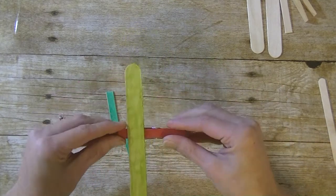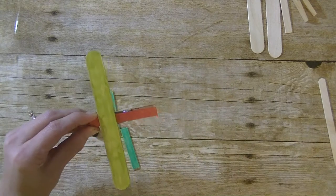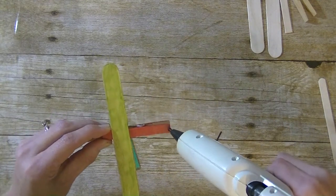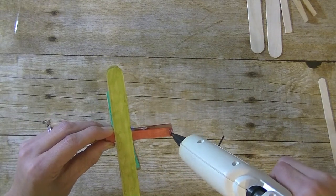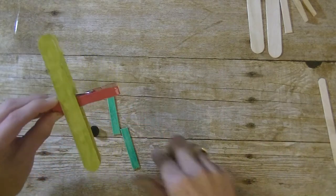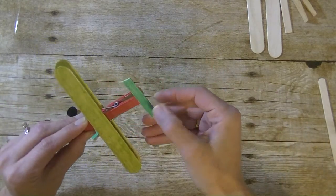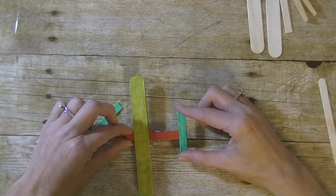Now I'm going to go ahead and put some glue on the back for the tail piece. Just like that - make sure it's straight, lay it down, and let it set up for a minute.